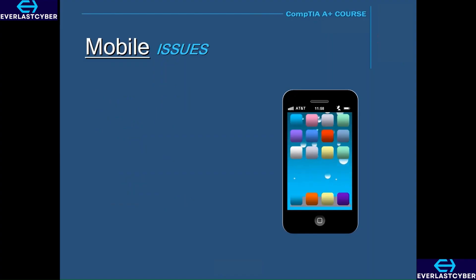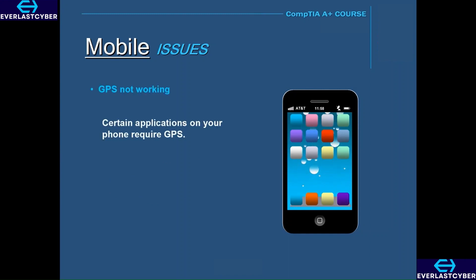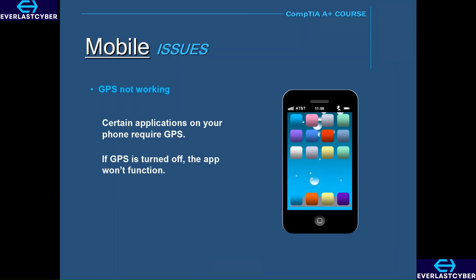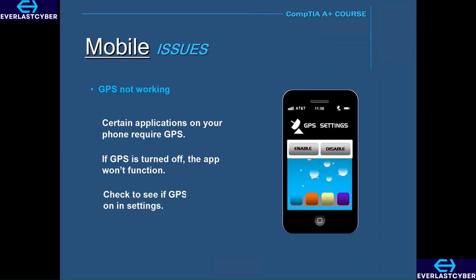Also, with cell phones, you may encounter issues where your GPS is not working. Certain applications on your phone require a GPS, so if a certain app is not working, it could be that your GPS is turned off. The first and most obvious thing to do is to go into the settings on your phone and make sure that the GPS is turned on.